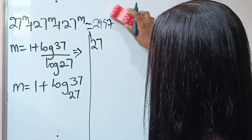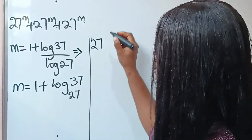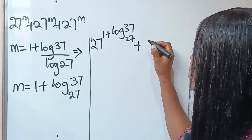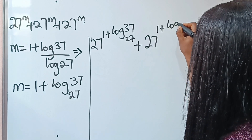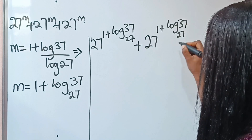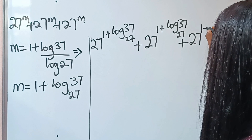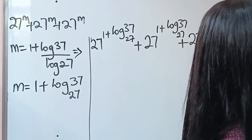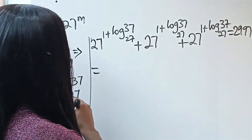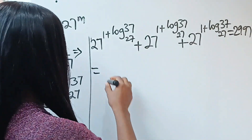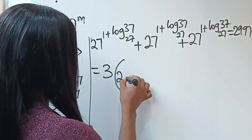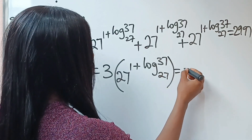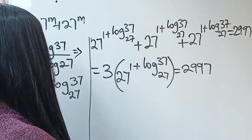Now it's time for substitution to verify. We substitute m equals 1 plus log base 27 of 37 back into 27^m. We have 3 times 27 to the power of (1 plus log base 27 of 37) equal to 2997.